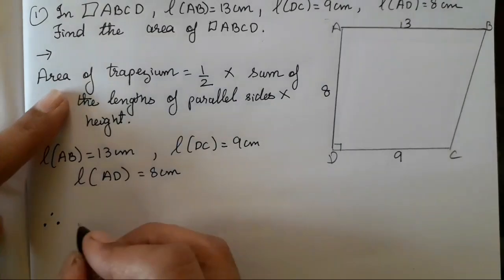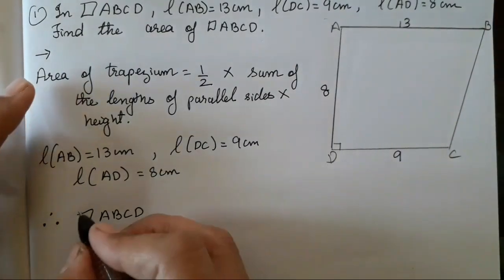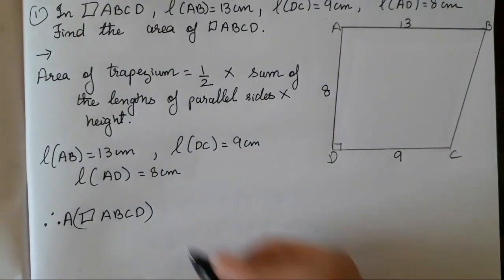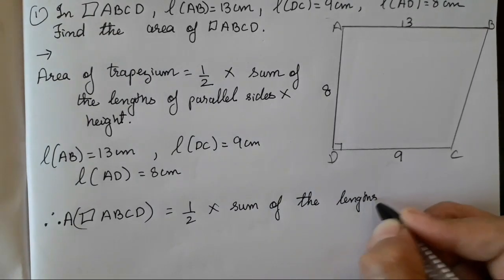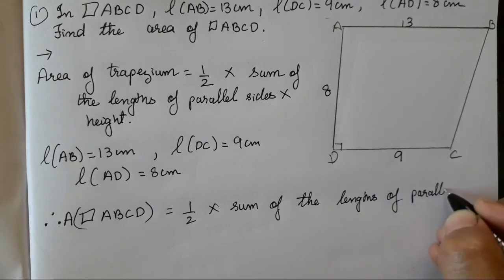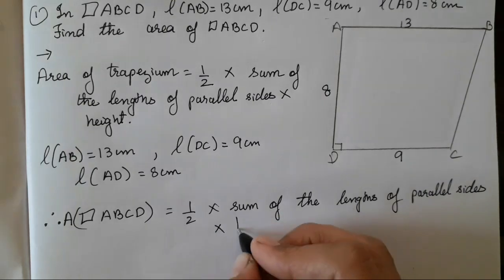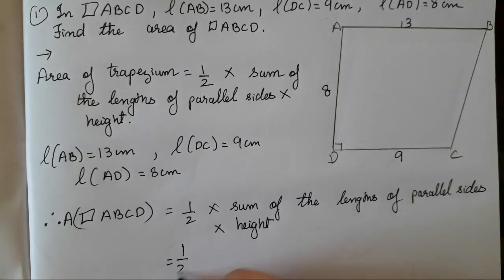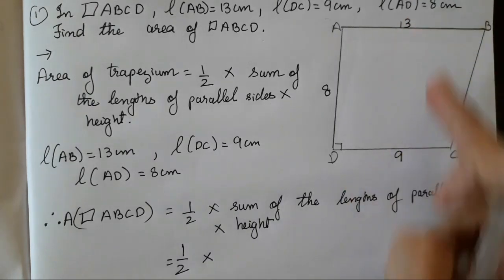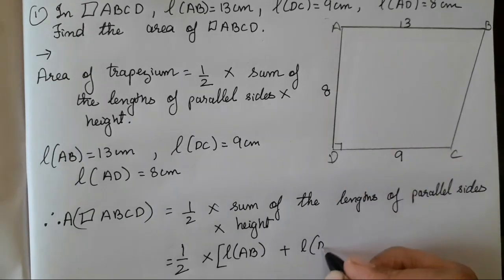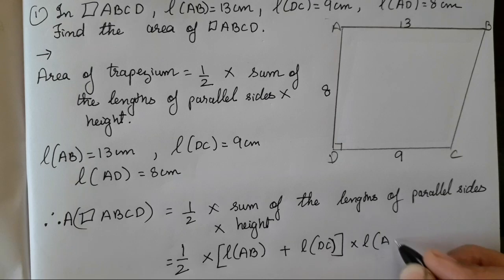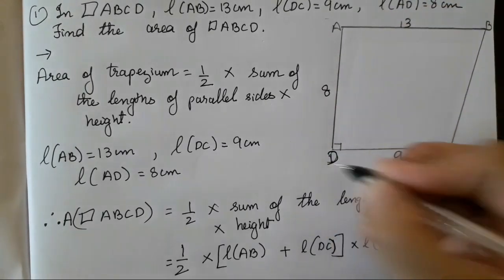So let us use the formula: area of a trapezium ABCD. We will write A is equal to half into sum of the lengths of parallel sides into height. So half as it is. Sum of the length of the parallel sides means these two — we will take it in a complete bracket, that is length of AB plus length of DC. Into length of AD, which is supposed to be the height.